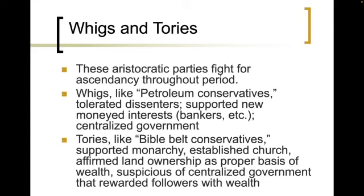Continuing on with ideas of politics: the Whigs and the Tories, these aristocratic parties, will fight for ascendancy throughout this entire period. The Whigs are like petroleum conservatives — they tolerated the dissenters and they support new money interests, such as the new riches coming in like bankers and merchants, and they push for a more centralized government. Tories would be more like Bible Belt conservatives — they support the monarchy, the established church, the sense of tradition, affirm land ownership as the proper basis of wealth, and they're very suspicious of a centralized government that rewarded newer followers who created their wealth.